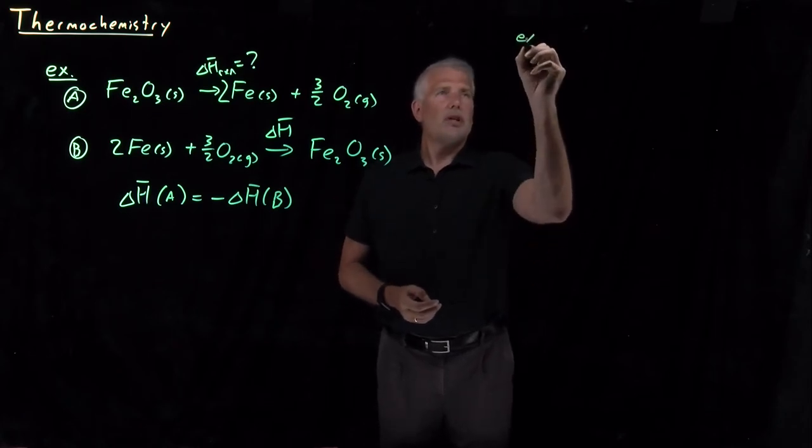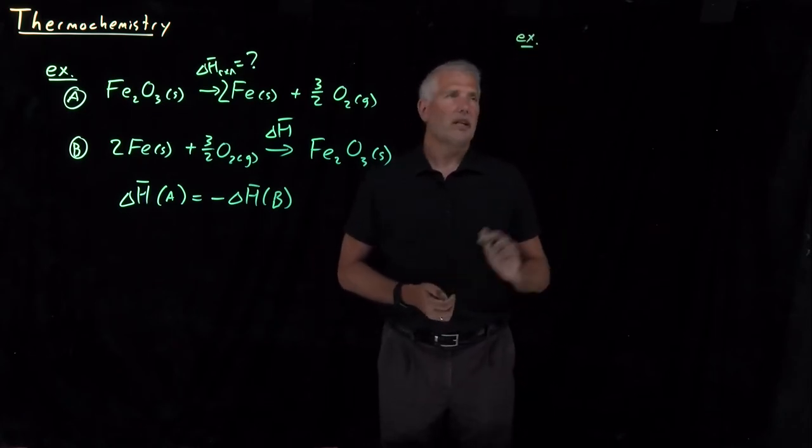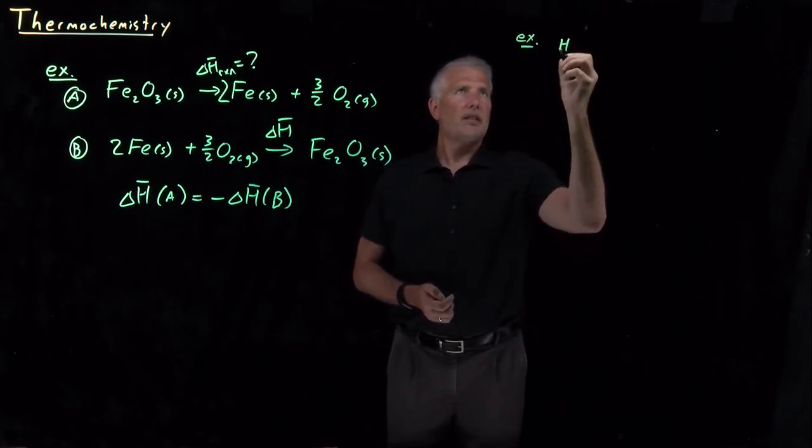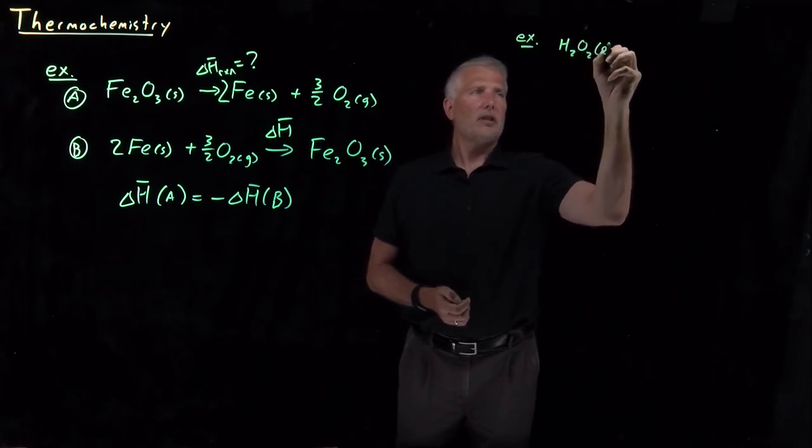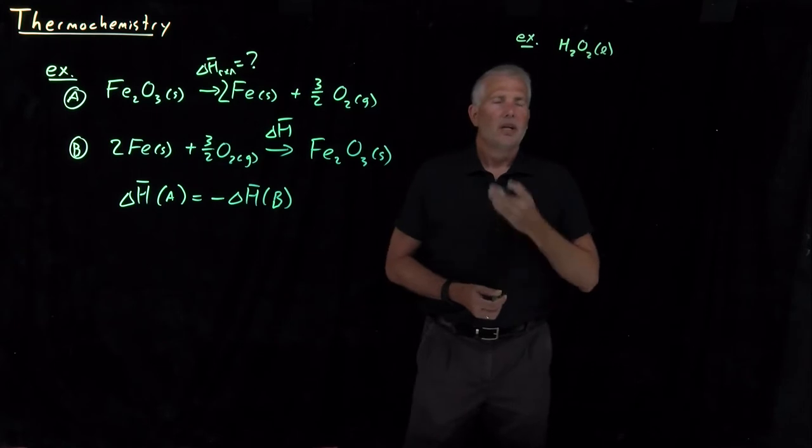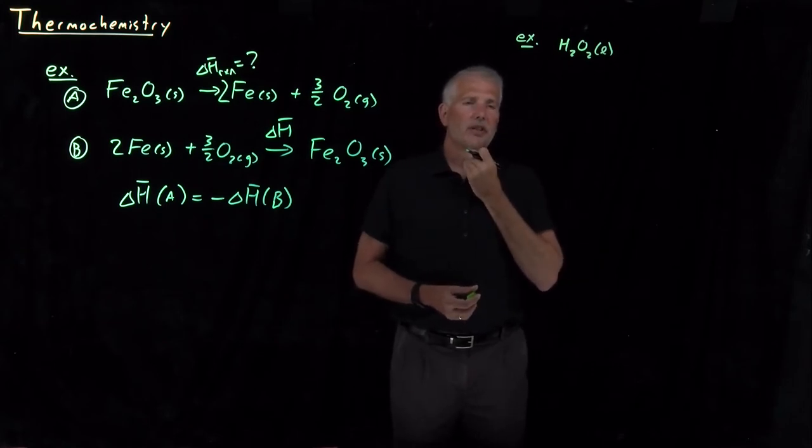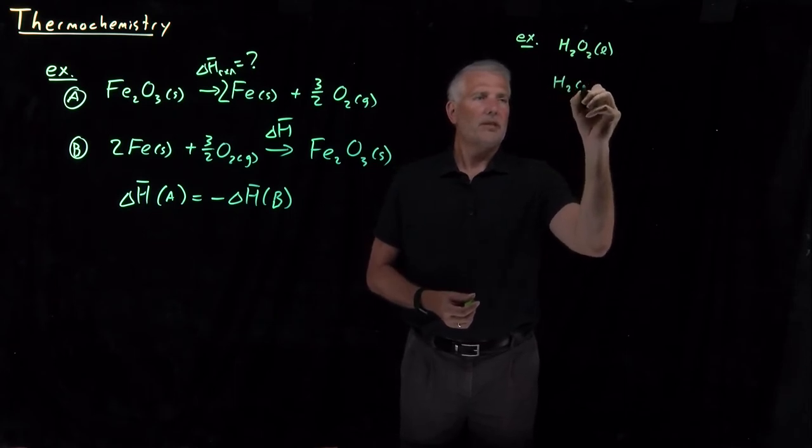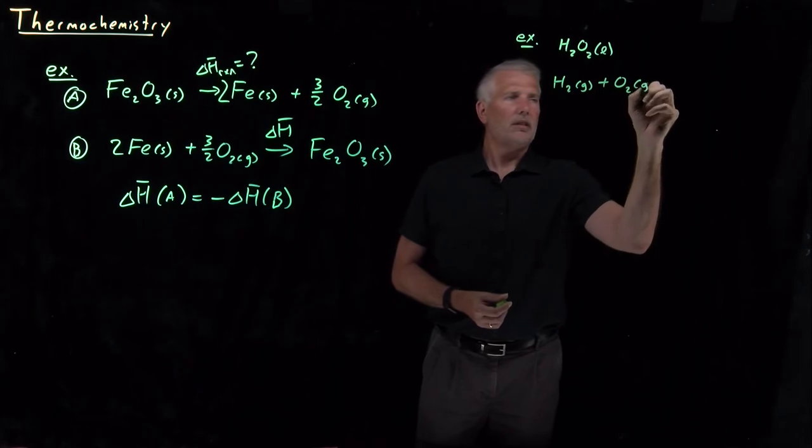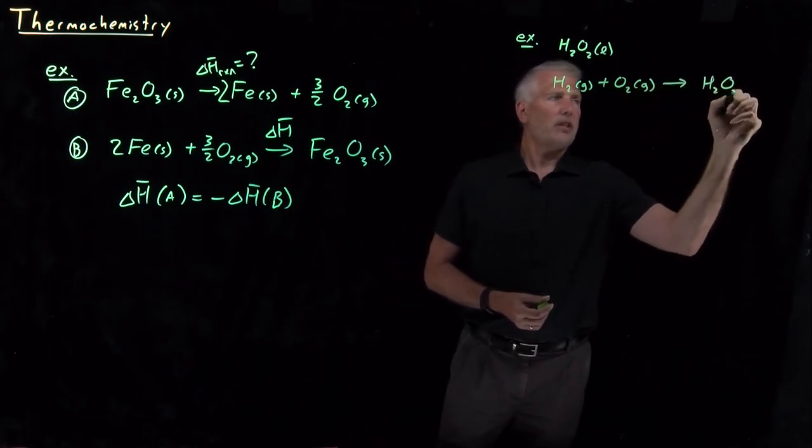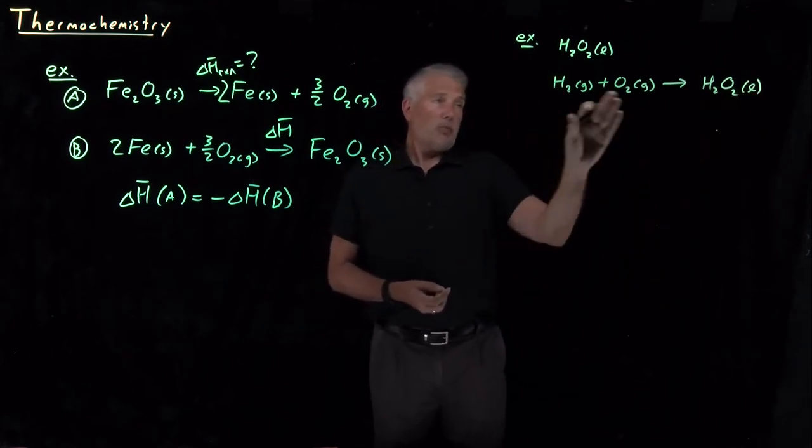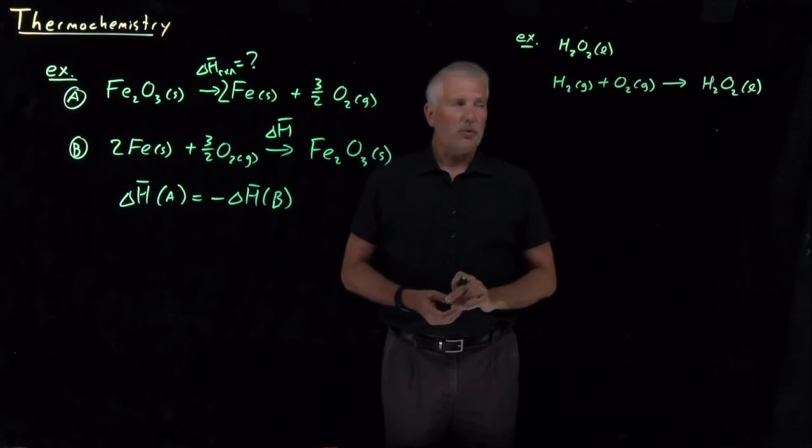As a slightly more involved example, let's say now that what we're interested in is hydrogen peroxide. Let's talk about the formation of hydrogen peroxide. There's a reaction that's fairly easy to balance. Hydrogen peroxide could be formed by combining H2 and O2 gas together. Let's say that's the reaction that we're interested in.